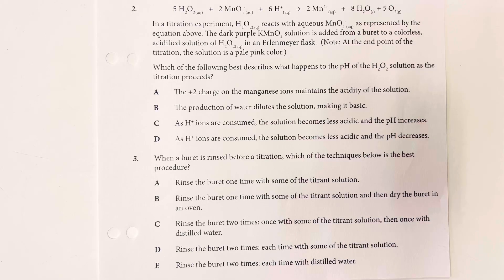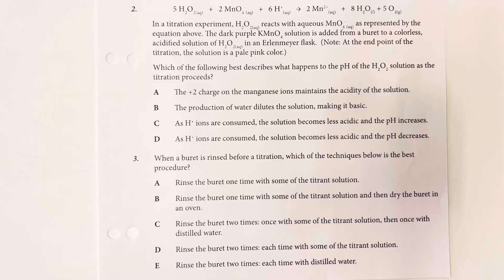In the titration experiment, hydrogen peroxide reacts with aqueous permanganate as represented by the equation above. The dark purple potassium permanganate solution is added from a burette into a colorless acidified solution of hydrogen peroxide in an Erlenmeyer flask. Note, at the end point of the titration, the solution should be a pale pink color.